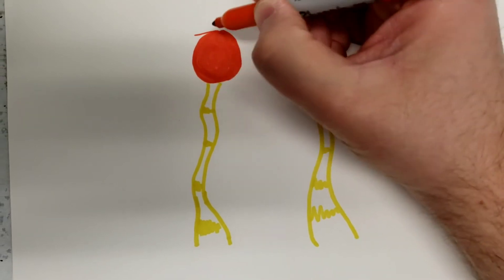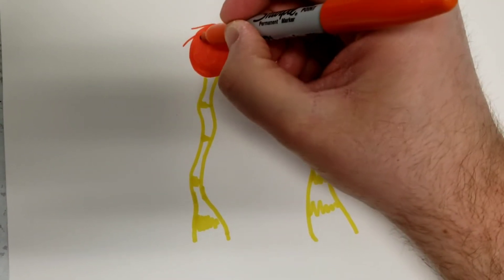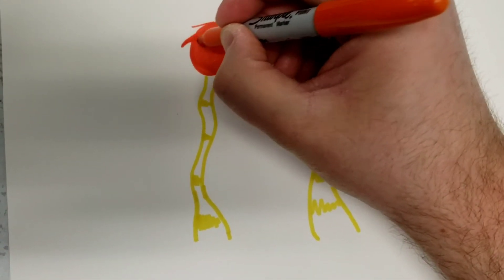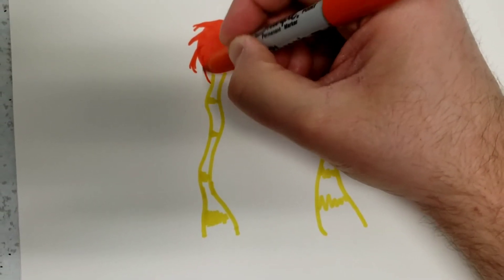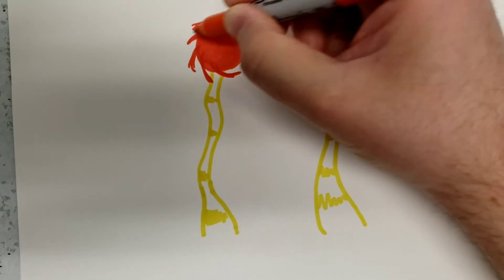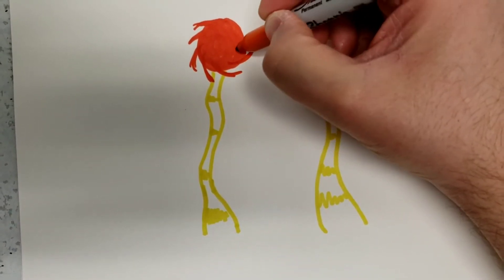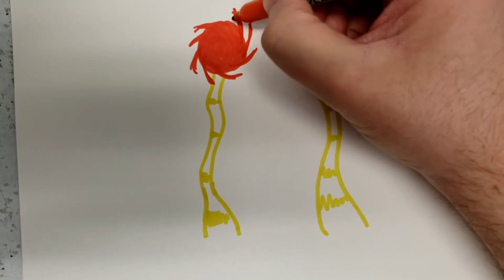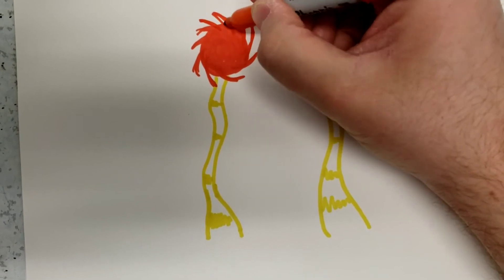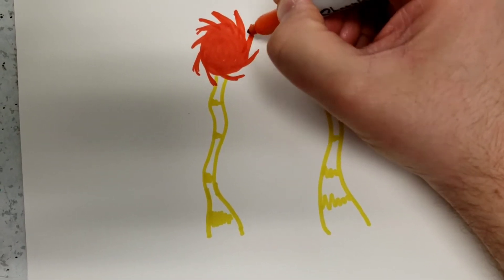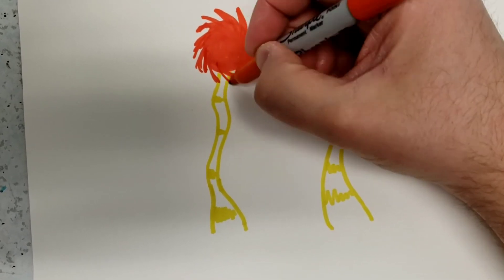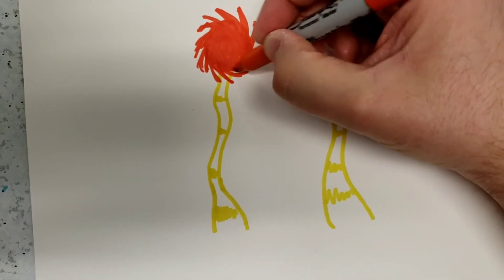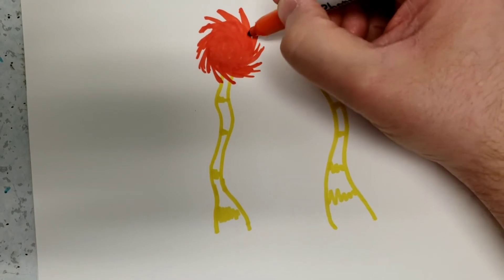Then you're going to come back and make these almost like fin shapes sticking out. You're going to go in a circle, and they can look squiggly, messy—that's totally fine. They can look rough. You can have some that are really long, some that are short, some that are thick, and some that are thin.